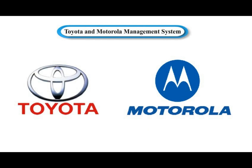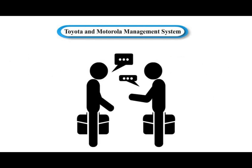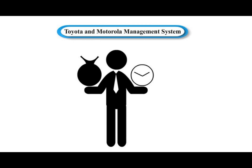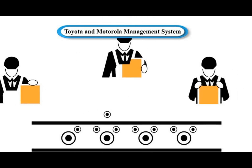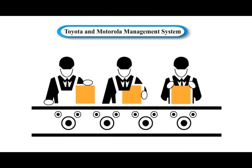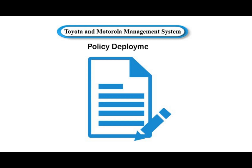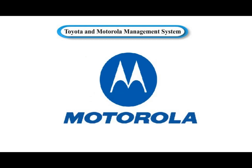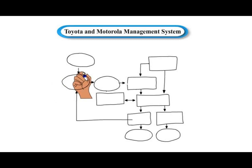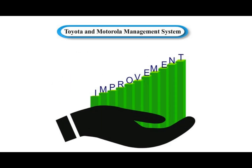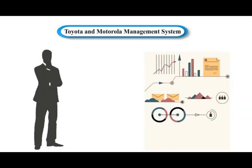Toyota and Motorola management systems allow their adopters to produce twice as much in half the time at half the cost with half the problems and with a fraction of the inventory. The Toyota management system is a combination of three innovations: just-in-time production, total quality management, and policy deployment. Motorola ensures that process metrics and structured methodology are applied to improvement opportunities directly linked to organizational strategy.